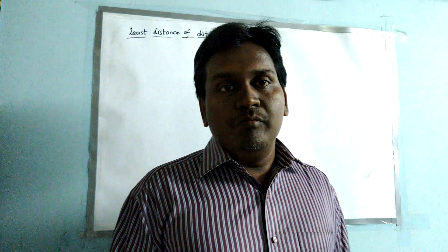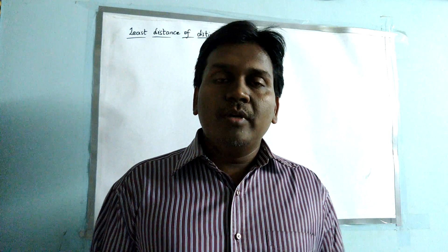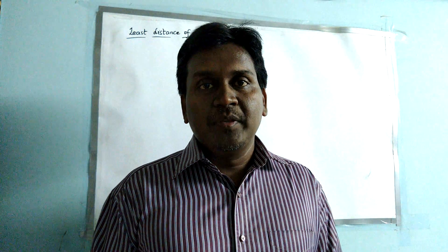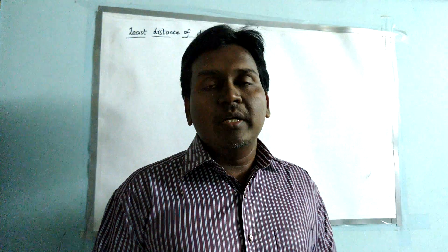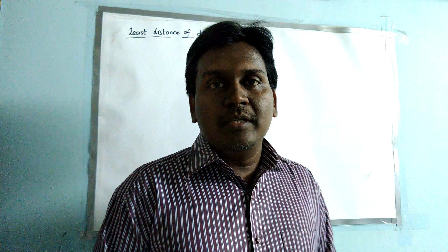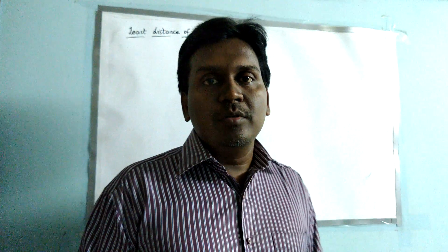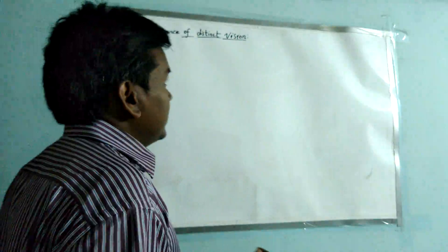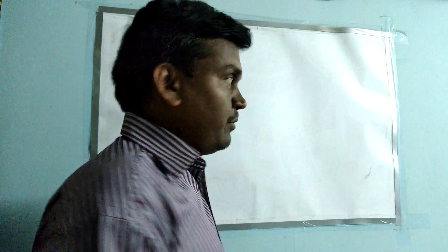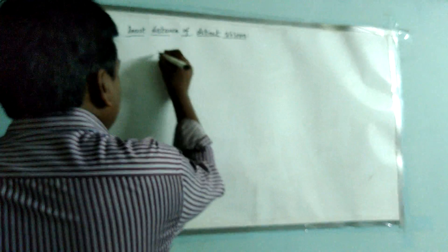If the object is nearer than the least distance of distinct vision, the person may not be able to concentrate or the object may not be clearly visible. For example, placing a pen very close to the eye means you cannot see the letters on it. Similarly, if it is too far, you may not be able to see comfortably for a long period. This least distance varies from person to person.